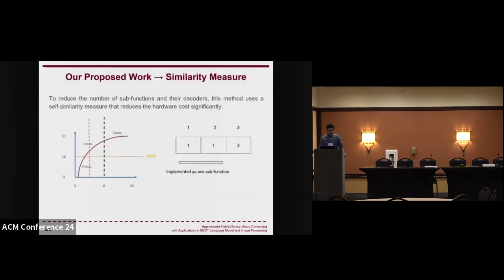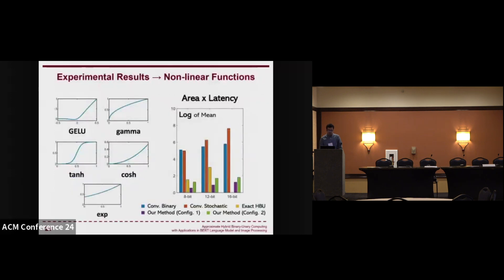This is how we find similarities between sub-functions. For example, we can observe that F1-1 is similar to F1-2, and we can implement them interchangeably. Let's look at the experimental results. We have implemented these nonlinear functions: GELU, gamma, tanh, hyperbolic cosine, and exponential functions.